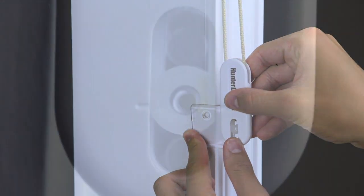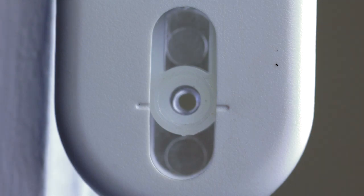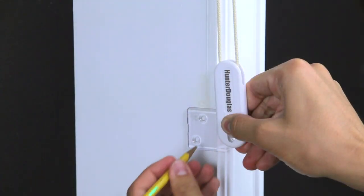Attach the tensioner to the bracket. Make sure that the tension spring is pulled down to the line. Draw the pilot holes.